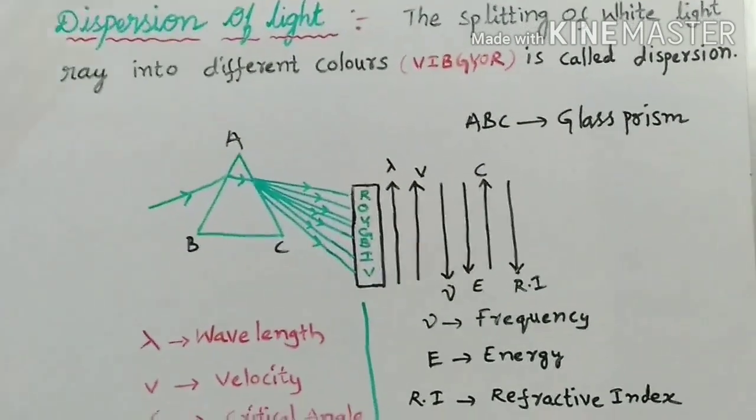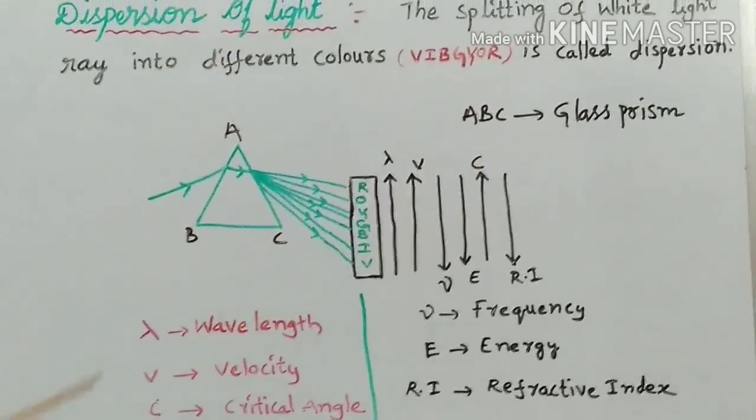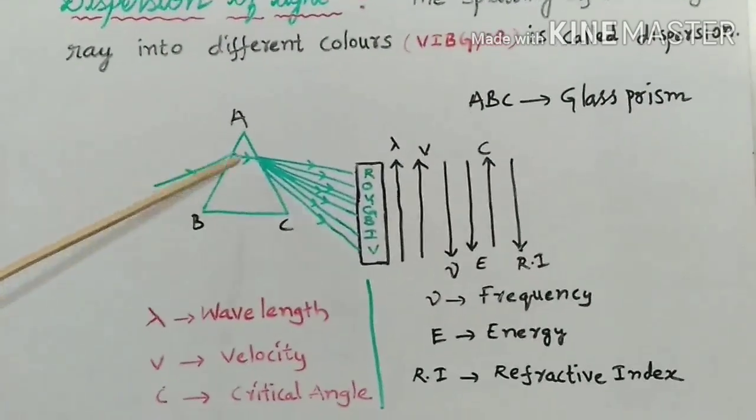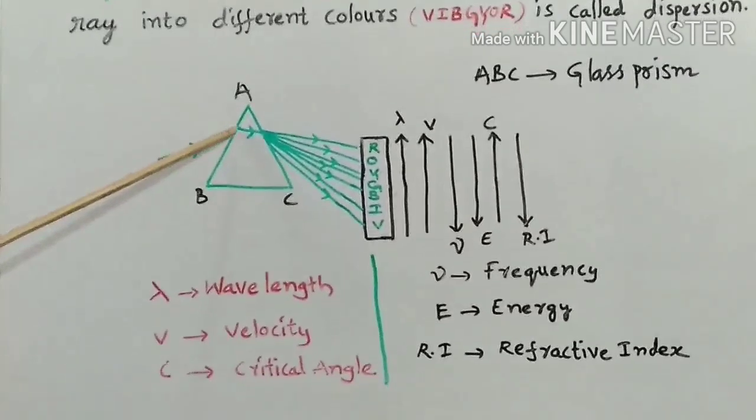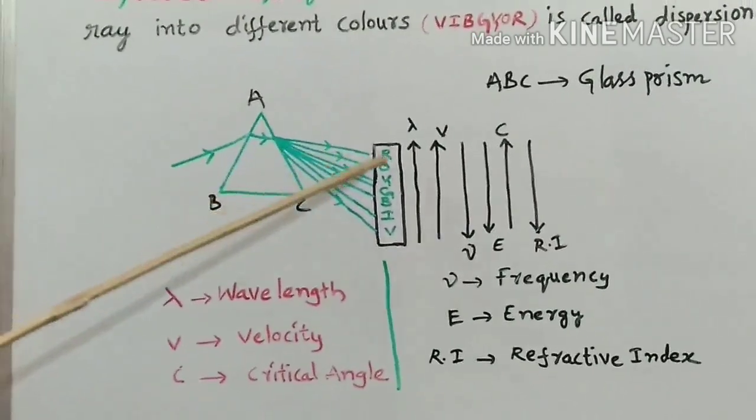you have to take this diagram. Here, ABC is glass prism. See, this is the white light ray. When it entered and refracted through the prism, it splits into seven colors, i.e., VIBGYOR.